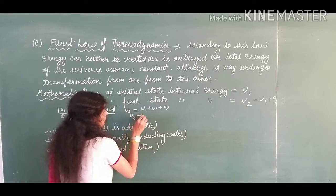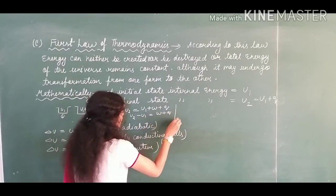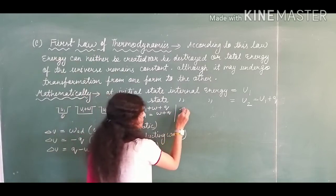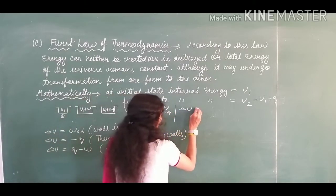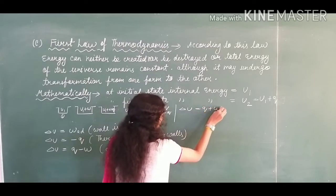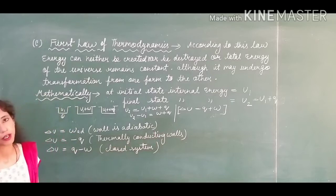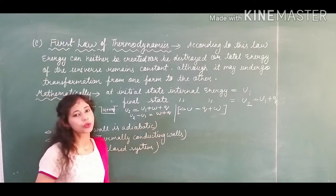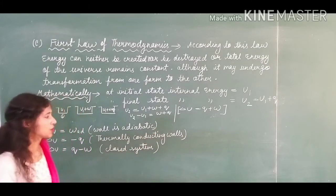So you can write U2 minus U1 that is equal to W plus Q or we can write U2 minus U1 that is to be denoted by internal energy change delta U and that is equal to Q plus W. So this is the mathematical statement which we have got in the time of work and the energy that relates to the internal energy change and that we have to use for the numerical problem also.